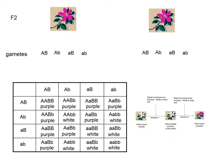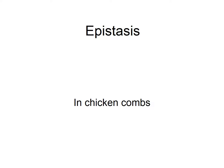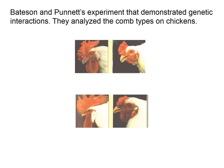Now let's look at the example of chicken combs, which you can see in your textbook. So, complementary epistasis again — this time for chicken combs. Chicken combs are the structures on top of the chickens' heads, and they come in different shapes. The shapes are as follows: there's rose shape and P shape.